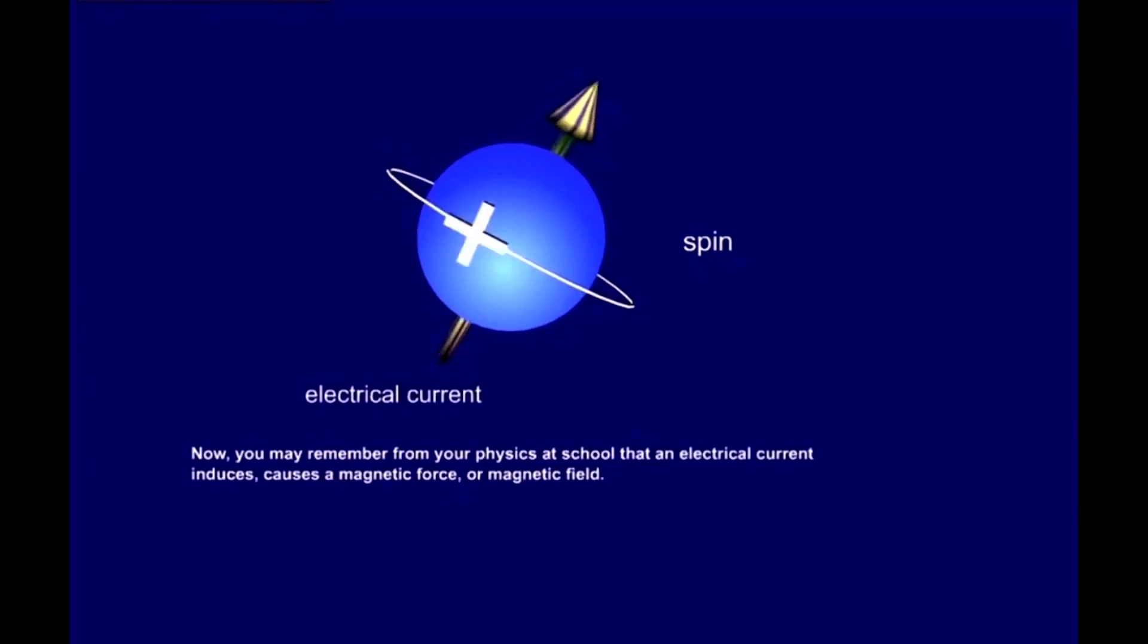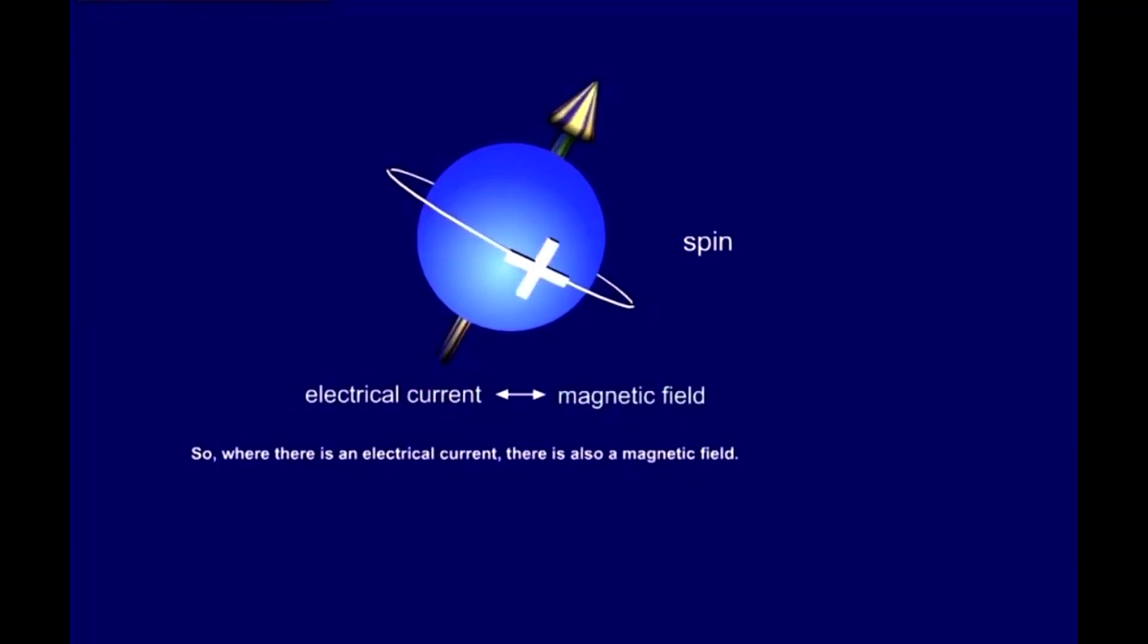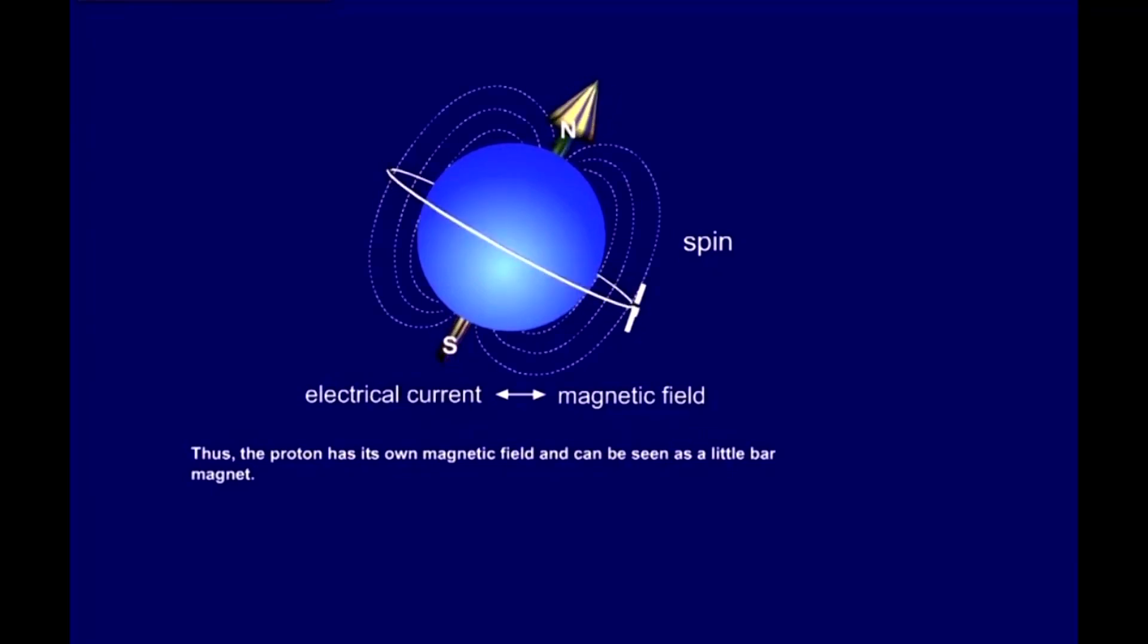Now, you may remember from your physics at school, that an electrical current induces, causes a magnetic force, or magnetic field. So, where there is an electrical current, there is also a magnetic field. Thus, the proton has its own magnetic field, and can be seen as a little bar magnet.